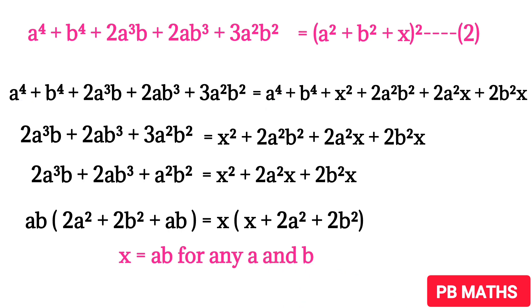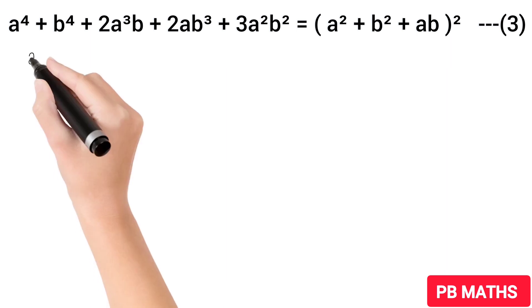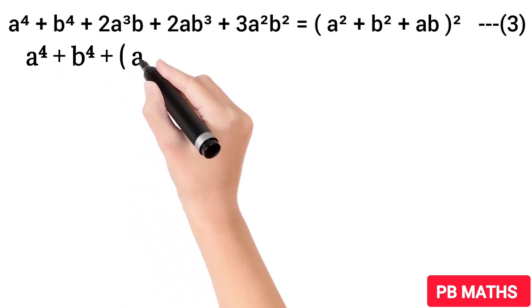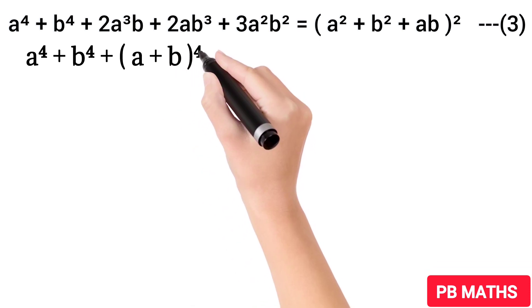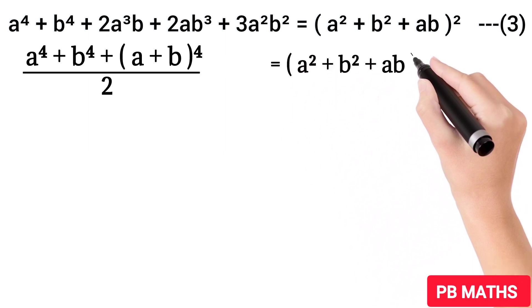Now let's substitute x equals ab into equation 2. Then we have a⁴ plus b⁴ plus 2a³b plus 2ab³ plus 3a²b² equals (a² plus b² plus ab) whole squared. Let's call this equation 3. From equation 3 and equation 1, we have: a⁴ plus b⁴ plus (a plus b) to the whole power 4, all divided by 2, equals (a² plus b² plus ab) whole squared.